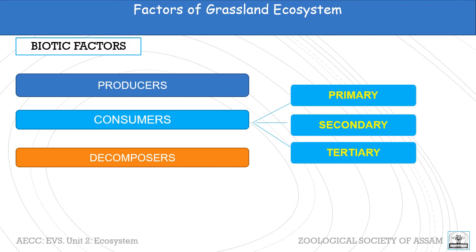The biotic factors can be grouped into three types: producers, consumers, and decomposers. The consumers can be further subdivided into primary consumers, secondary consumers, tertiary consumers, and in some cases a quaternary consumer may also be present.